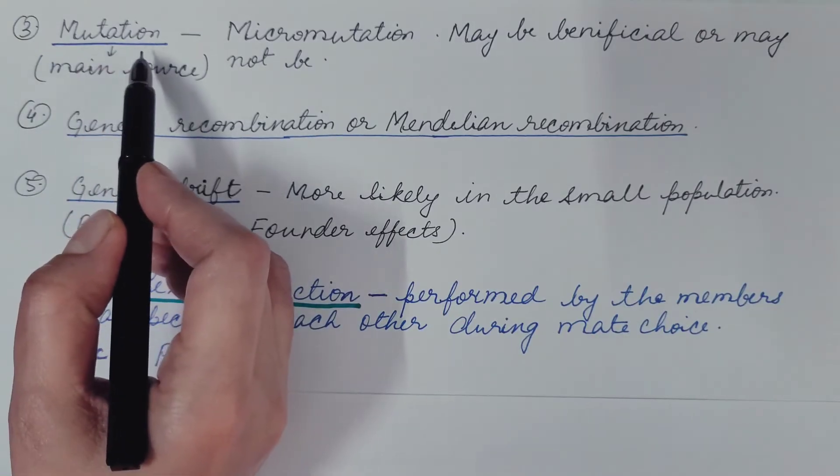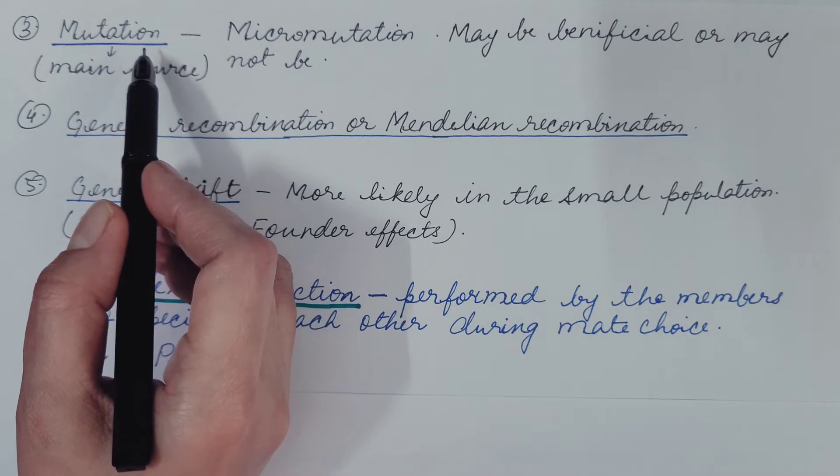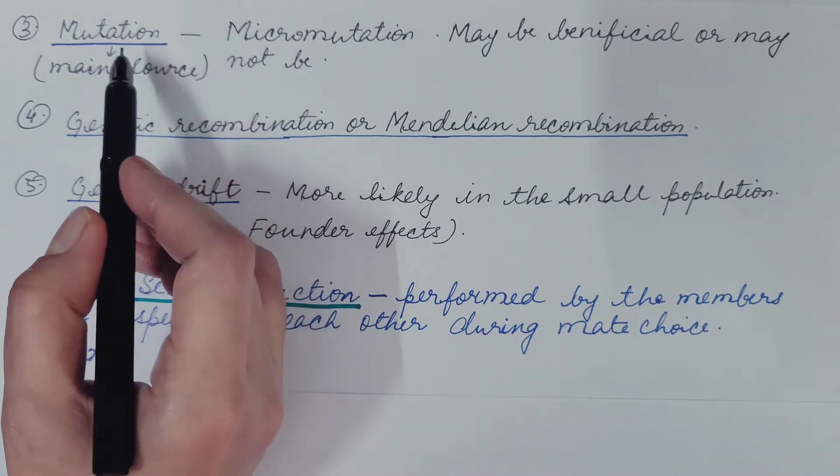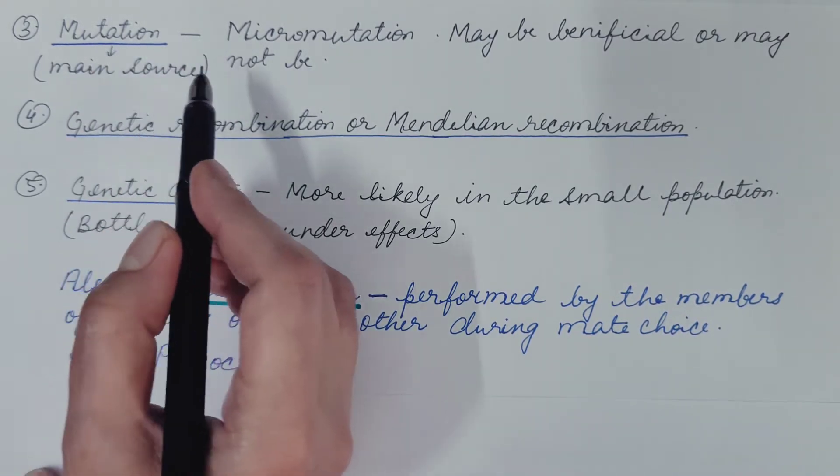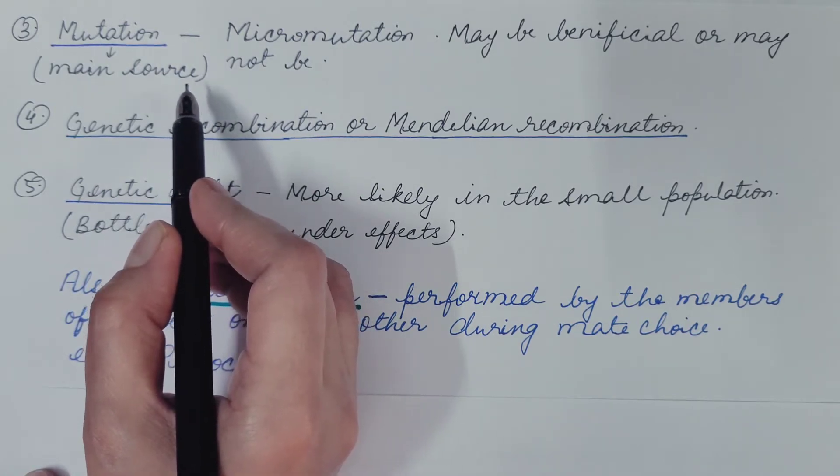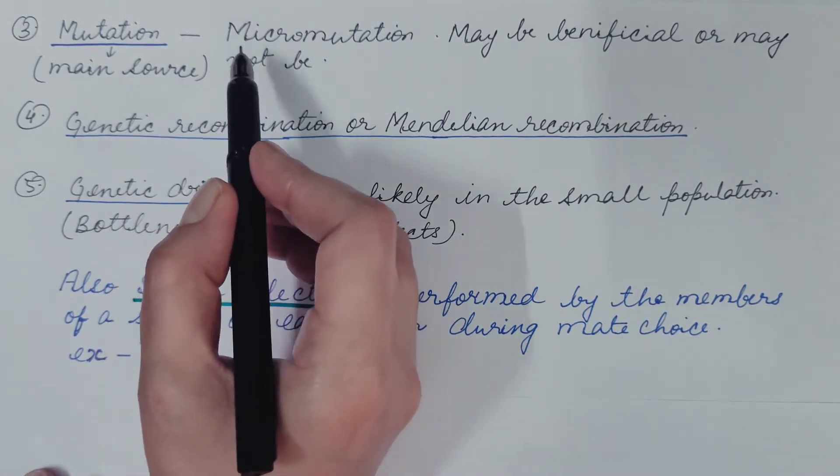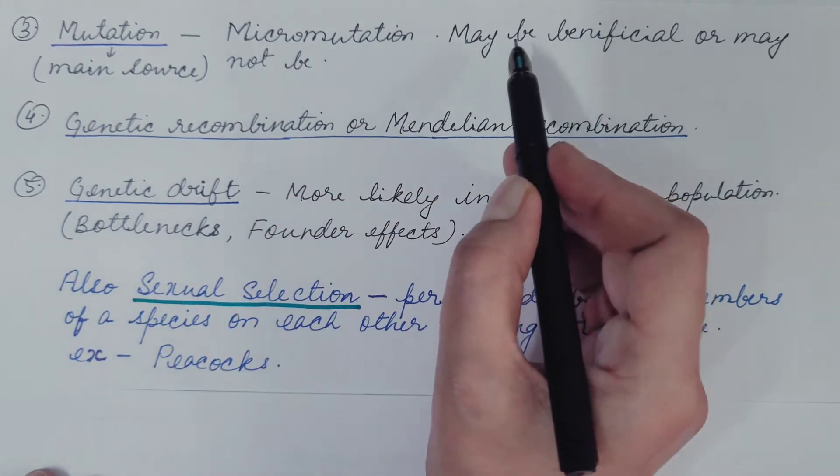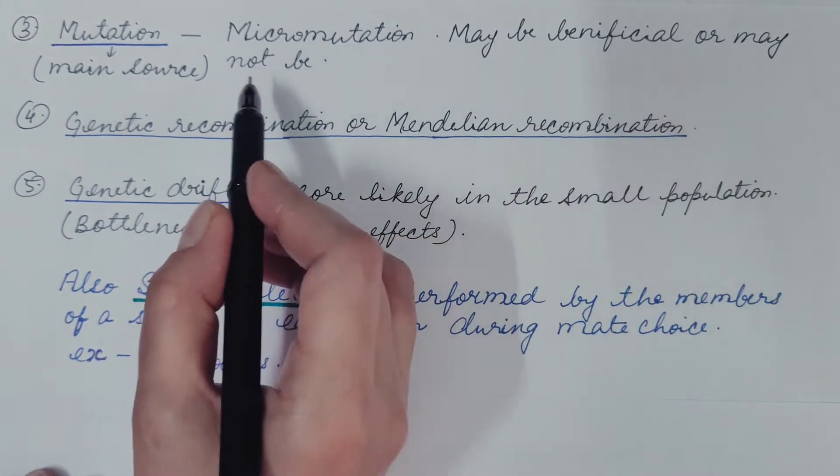Third is mutation. It is the change in the DNA sequence of genome of the cell and it is the main source for the change in the gene frequency of the population. Here micromutation plays an important role. It may be beneficial or may not be.